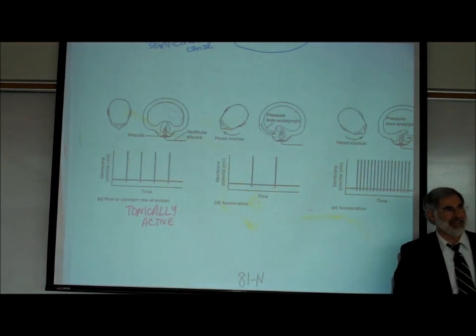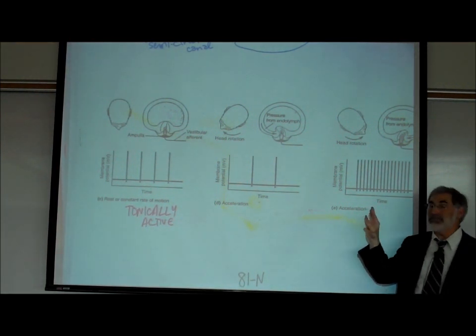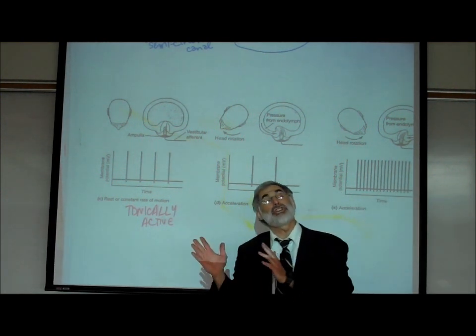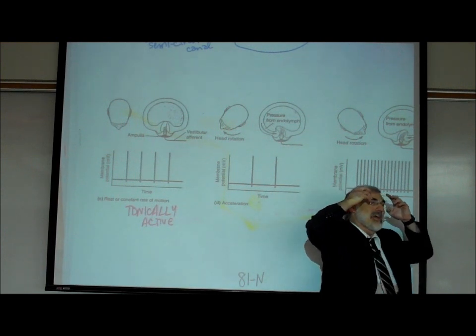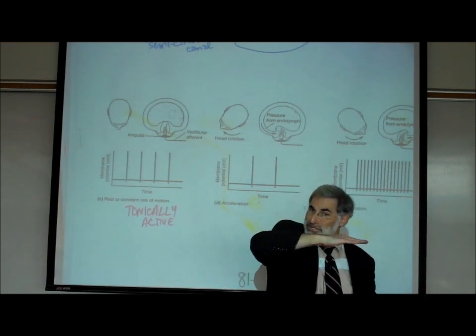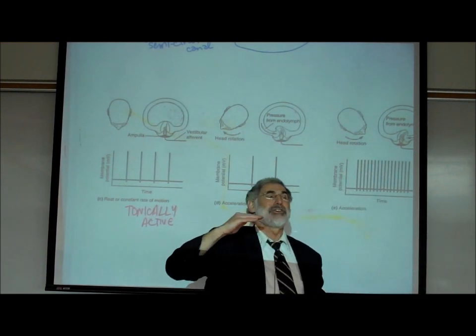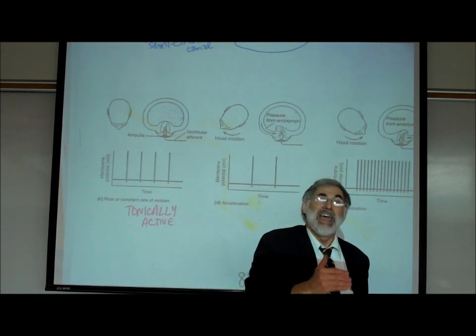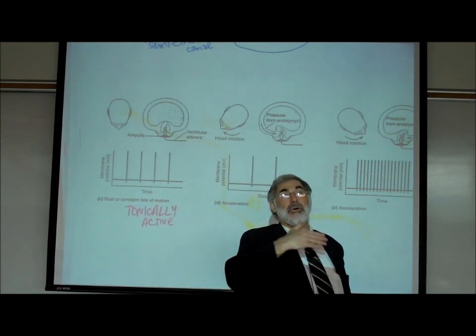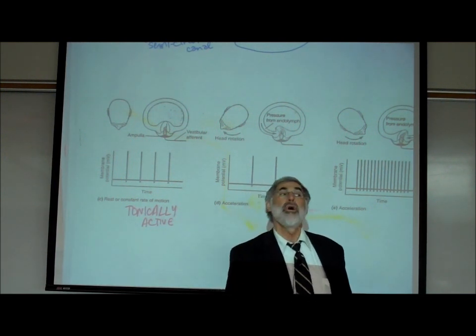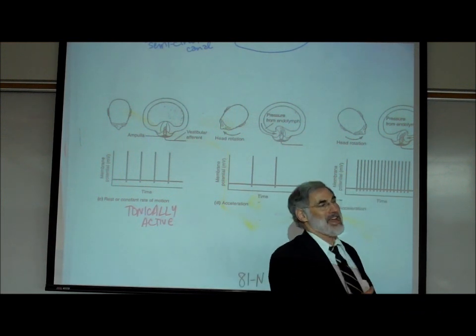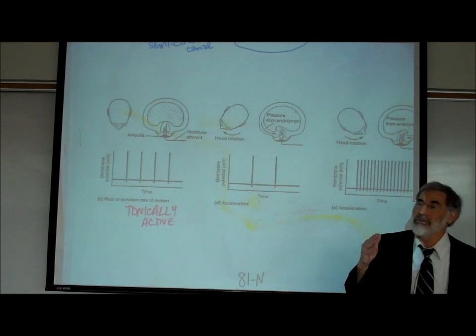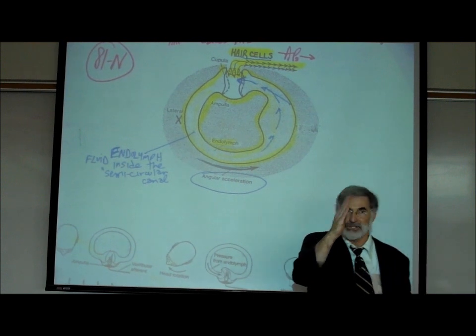It's the change in frequency that informs your brain. From the horizontal semicircular canal, your brain says: I'm spinning, and because the frequency is either increasing faster or becoming slower than normal, I know whether I'm spinning clockwise or counterclockwise. Remember, you have semicircular canals in all three dimensions of space.